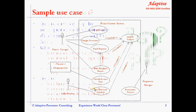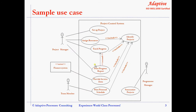Here we present a sample use case of a project control system. The project control system is used by team member, project manager, program manager, and the invoice system. Each one of these can be considered as an actor.